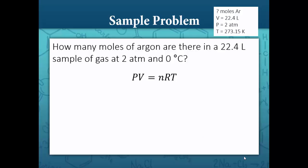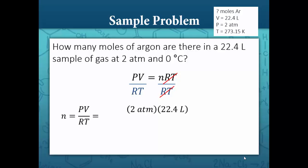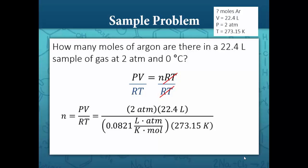Then we're going to use our equation PV equals nRT. We want to solve for moles of argon, so we need to isolate the variable n. We do that by dividing both sides by RT. RT cancels out on the right-hand side, and our equation becomes n equals PV divided by RT. Pressure is 2 atm, volume is 22.4 liters, Rydberg's constant is 0.0821 liters atm per mol, and temperature is 273.15 Kelvin. Our answer becomes 2 moles.